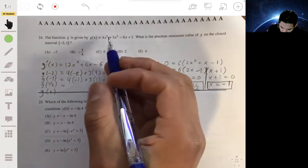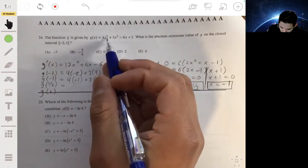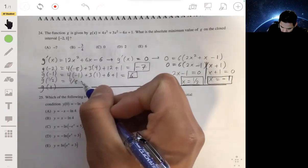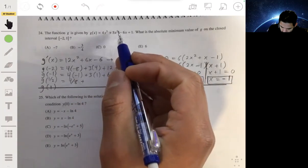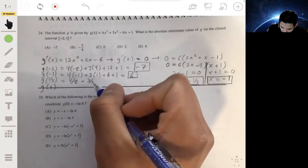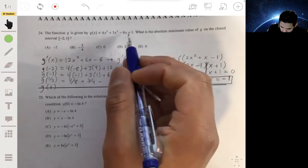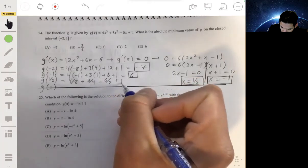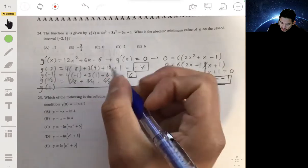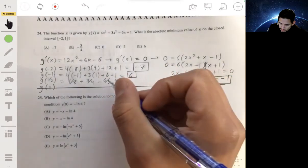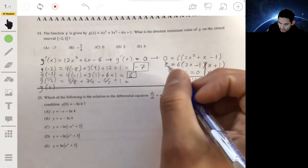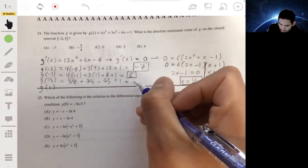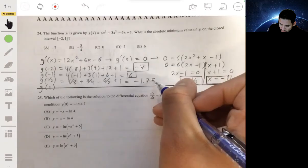g of one half: one half cubed is one eighth, four eighths, minus six over two, plus one. So one half plus one, three fourths, one fourth minus three. That'll be negative 1.75.